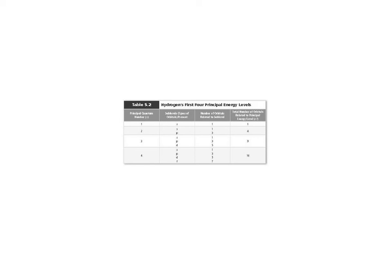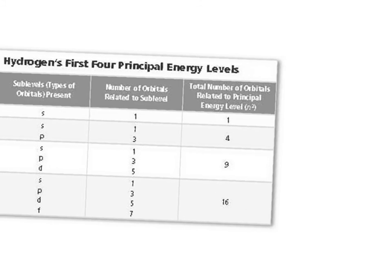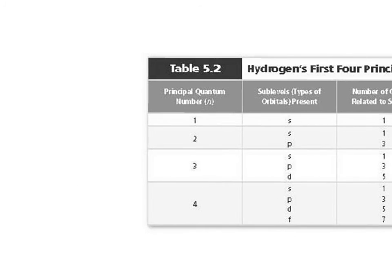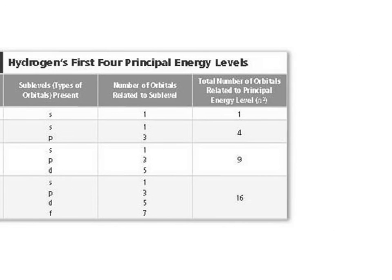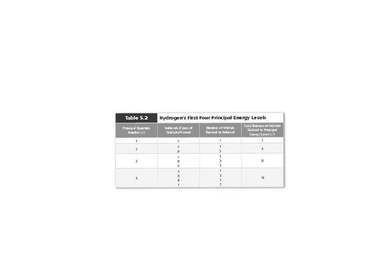Here's a summary chart. The first energy level has only 1 S orbital, so just 1 orbital total. The second principal quantum number has an S and a P, giving 4 orbitals total. The third energy level has S, P, and D — adding up to 9 orbitals. The fourth energy level has all four sublevels: 1 + 3 + 5 + 7 equals 16 different orbitals — that's a lot of electrons floating around in there.